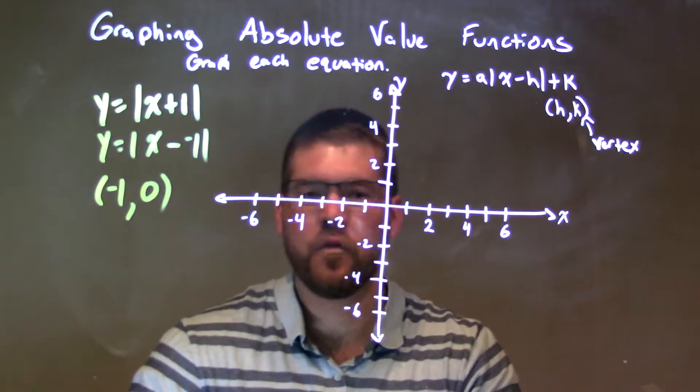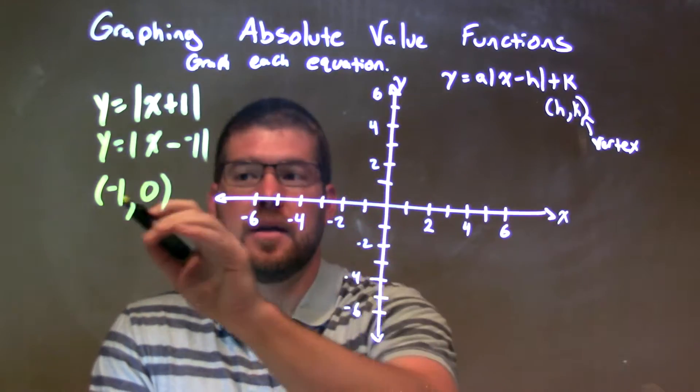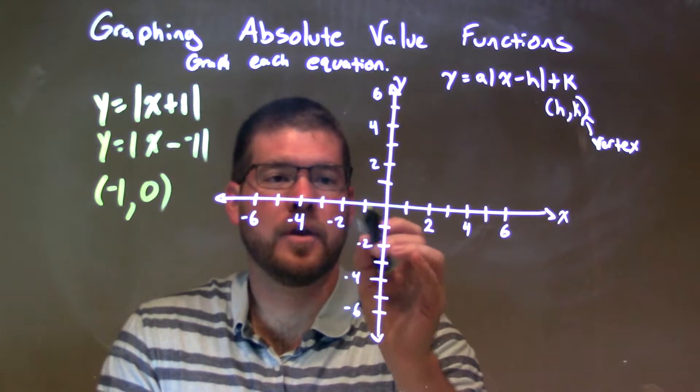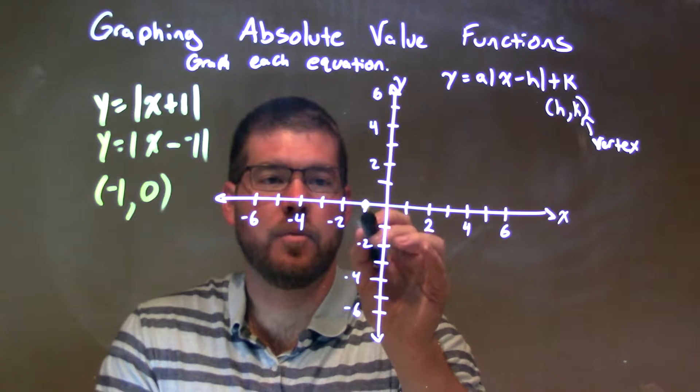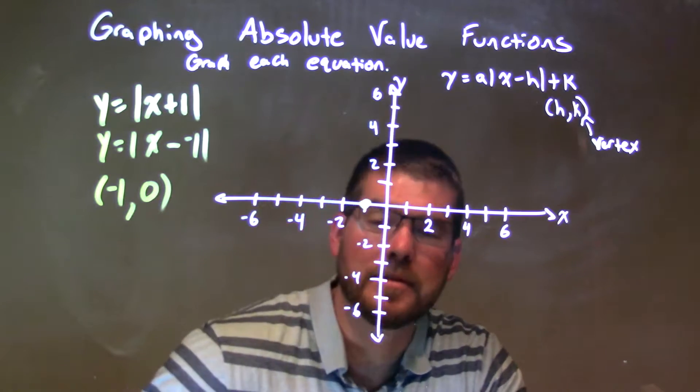Now we have our vertex. Let's go graph that. Negative 1 comma 0, so we go over negative 1 and up 0 units. We have a point right here: negative 1 comma 0.